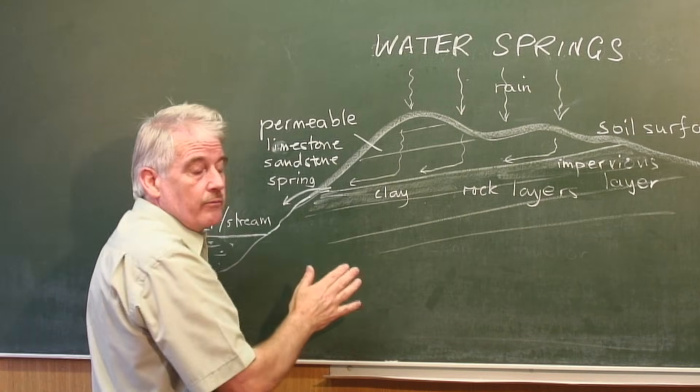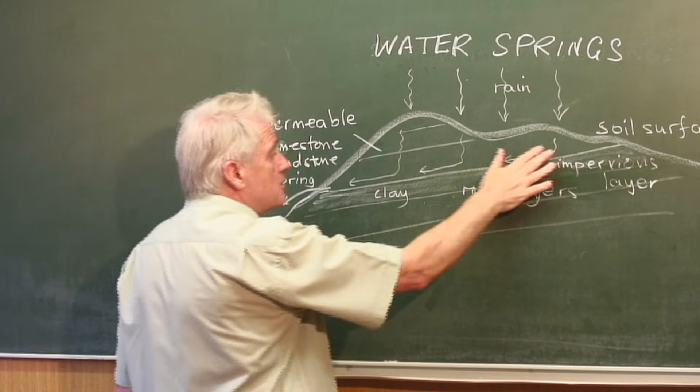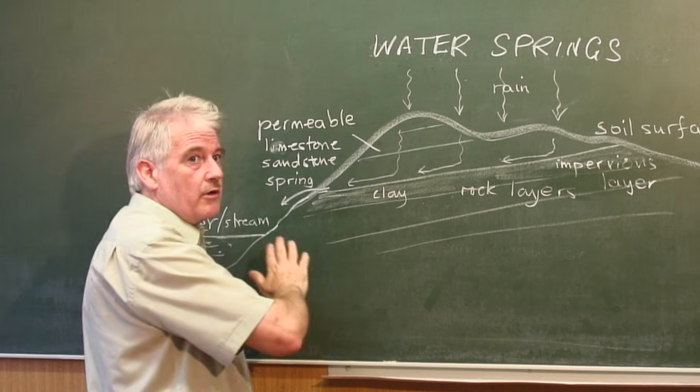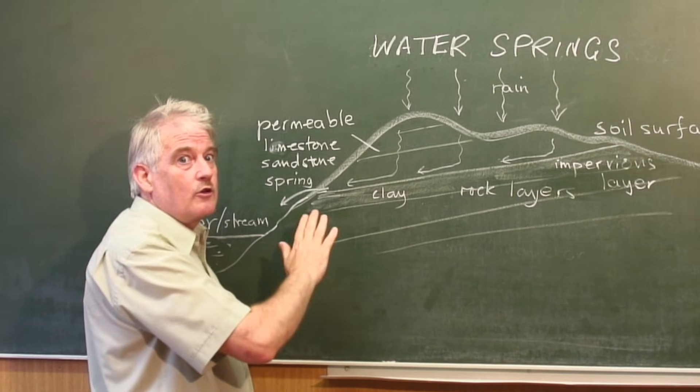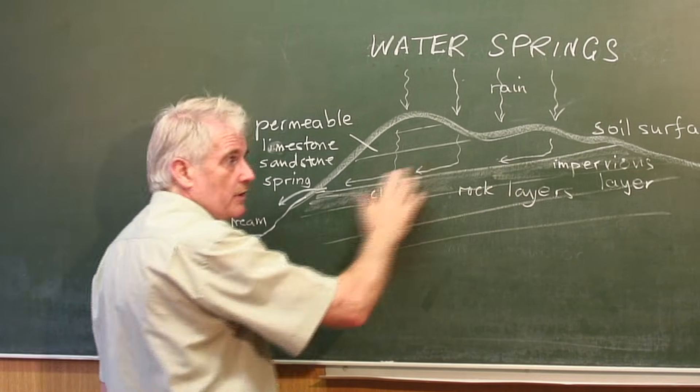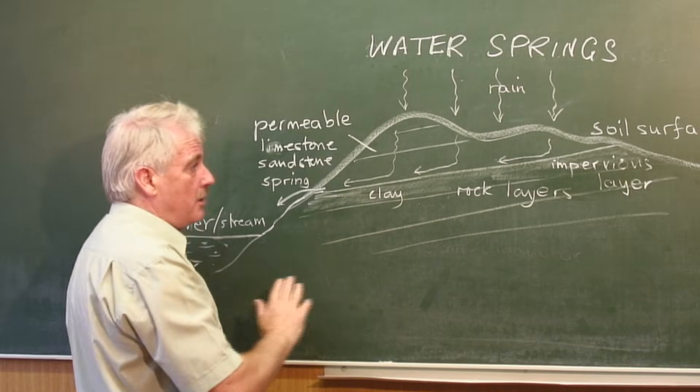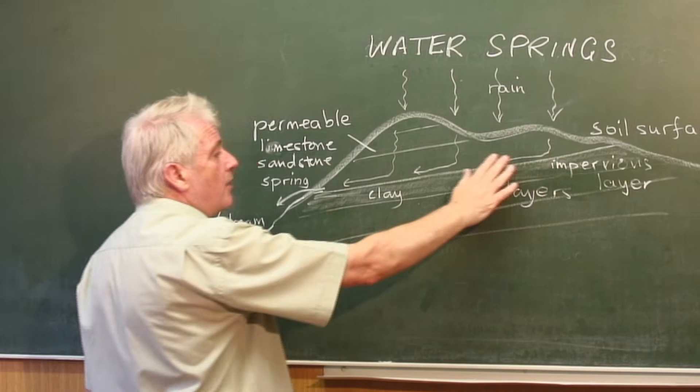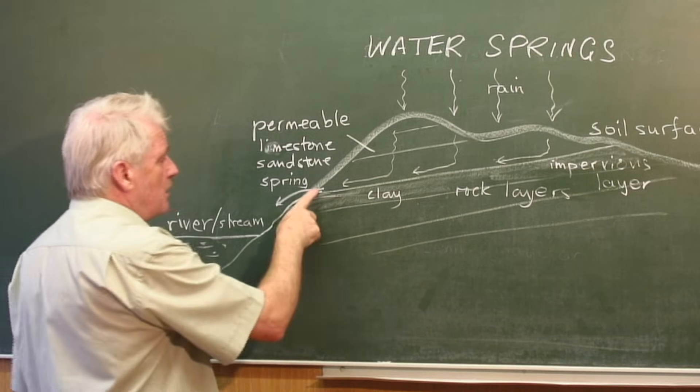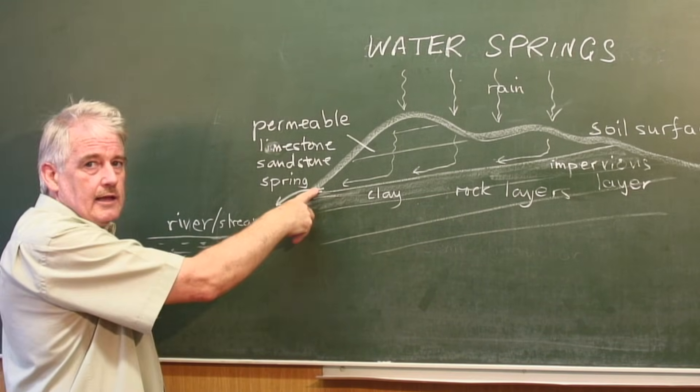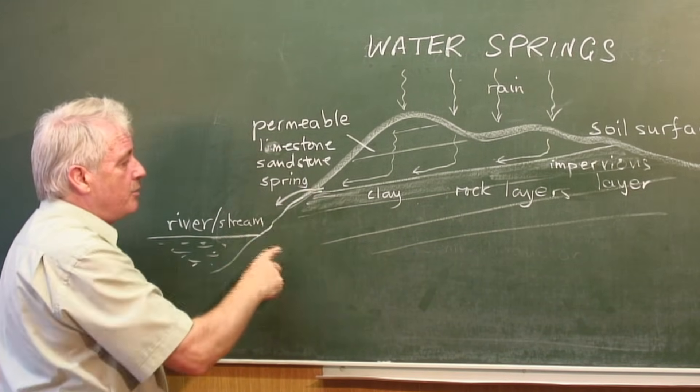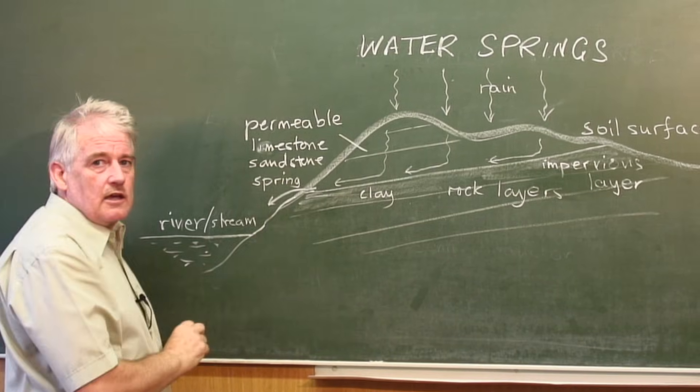So what it then does is follow the contour, remembering it has to obey the laws of gravity, and therefore it's going to go downhill and not uphill. It will flow along that surface until it comes to the land surface, and at that point you will see a spring.